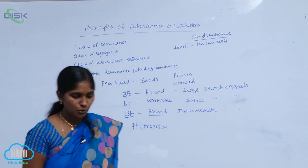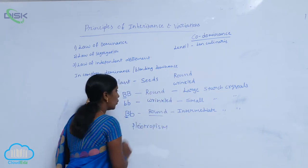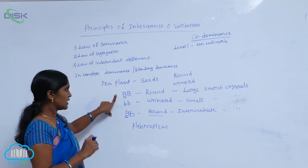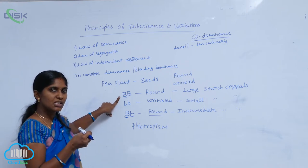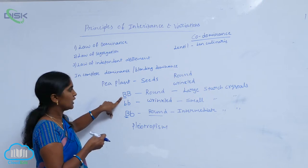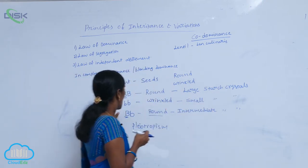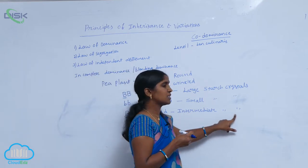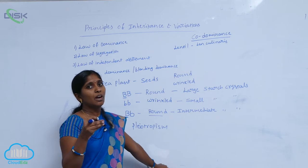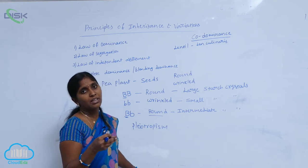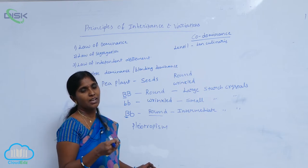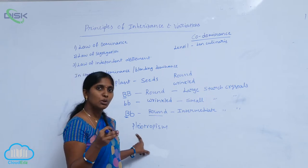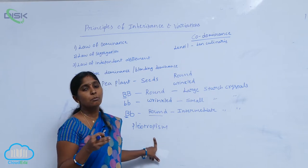What is pleotropism? Pleotropism means one gene can represent one or more characters. For example, the B gene when combined with the dominant B gives large starch crystals. When combined with recessive b, it gives intermediate starch crystals. According to availability and environment, it shows some changes. One gene or one allele can show changes in one or more character features. That phenomenon is called pleotropism, and such genes are called pleotropic genes.